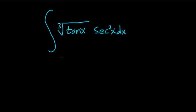Integrate the cube root of tangent x times secant squared x. When you see something like this, you should immediately think of u substitution. If you let u be tangent, then the derivative of tangent is right there, so it works out really nice.